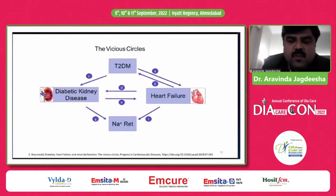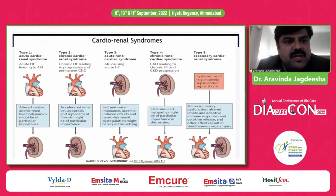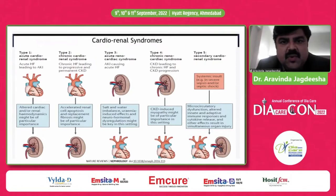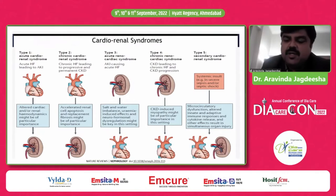Coming to cardiorenal syndrome, there are five types: Type 1 is acute cardiorenal syndrome; Type 2 is chronic cardiorenal syndrome; Type 3 is acute renocardiac syndrome; Type 4 is chronic renocardiac syndrome; and Type 5 is secondary cardiorenal syndrome. These five types are interlinked and depending upon the type, the management protocol changes.